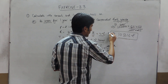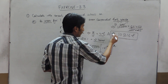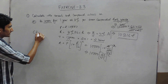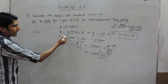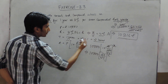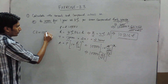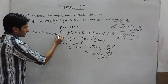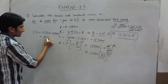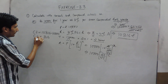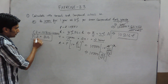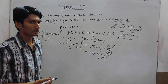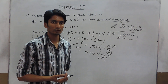So this will be our amount. If you want to find the compound interest, we can subtract the principal: 10,816 minus 10,000 gives 816. So rupees 816 will be your compound interest for this particular question. Thank you.